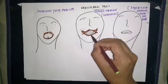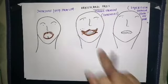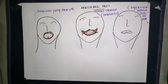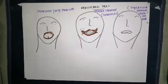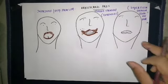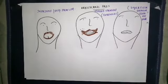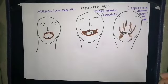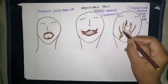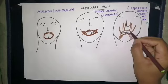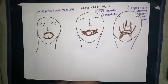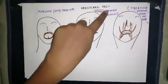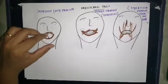The buccinator muscle on both sides contributes to the formation of the middle stratum of orbicularis oris through its decussating fibers. The superficial stratum of orbicularis oris is derived from the elevators and depressors of the lip and mouth that we discussed earlier.